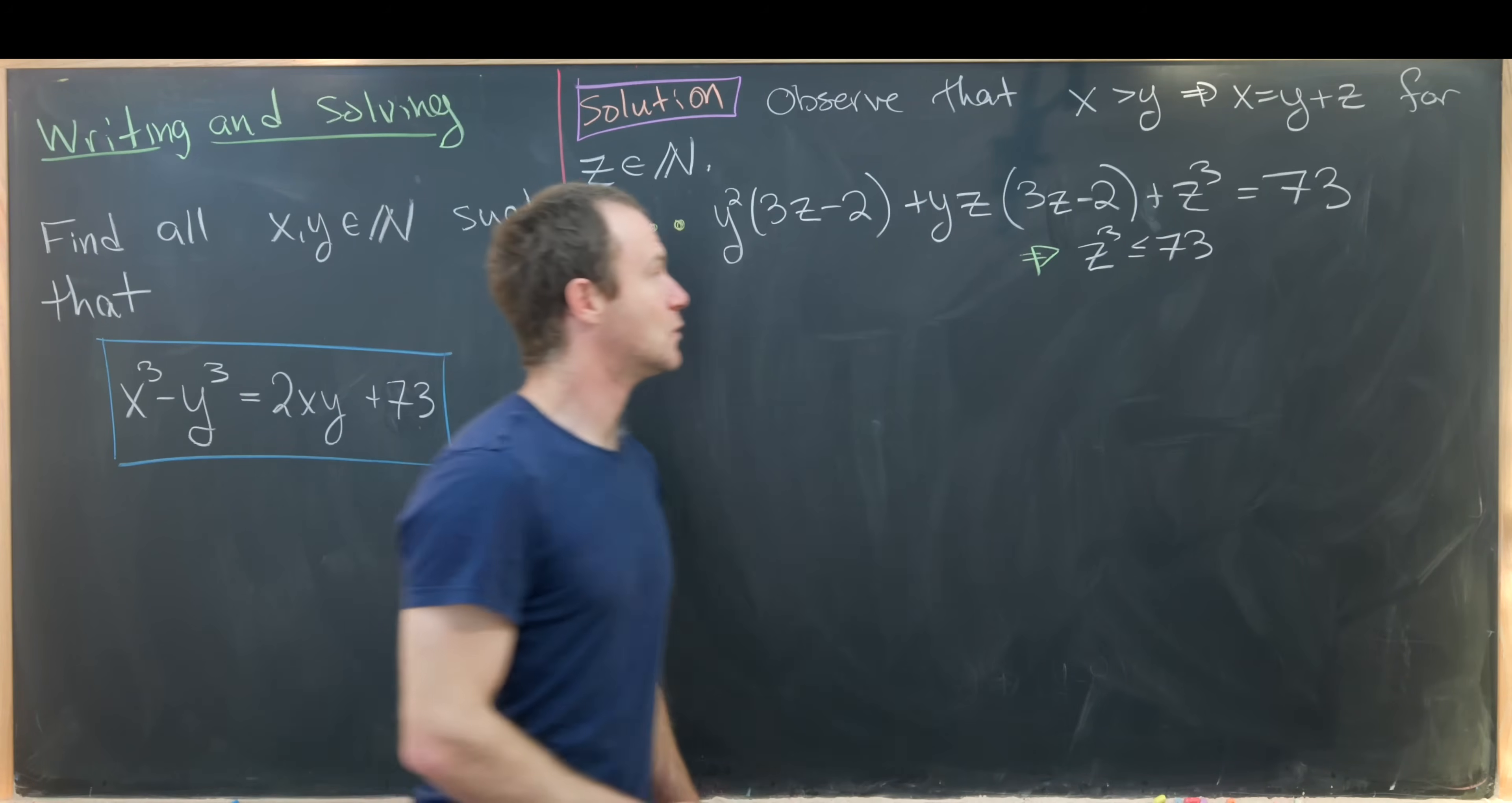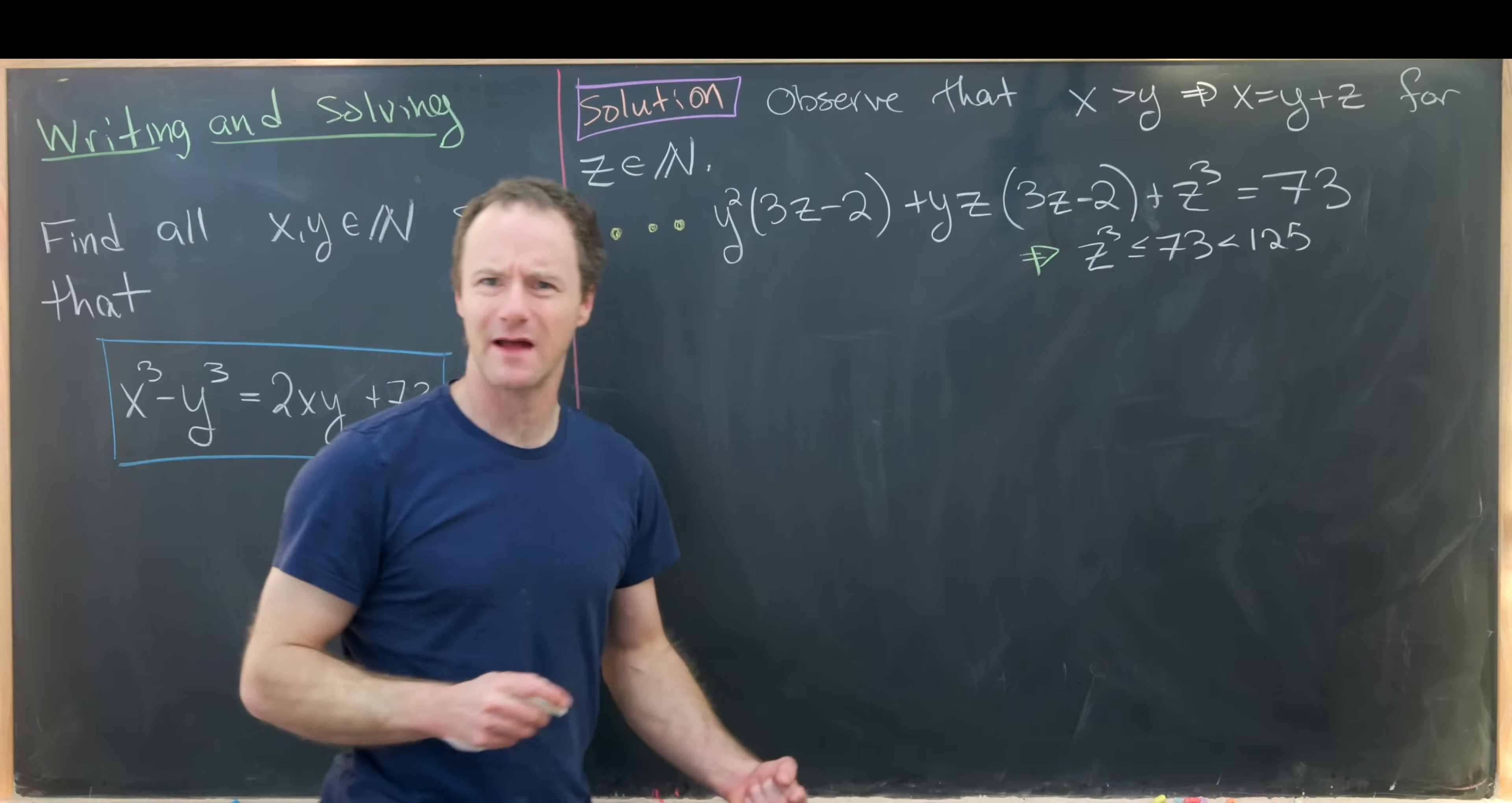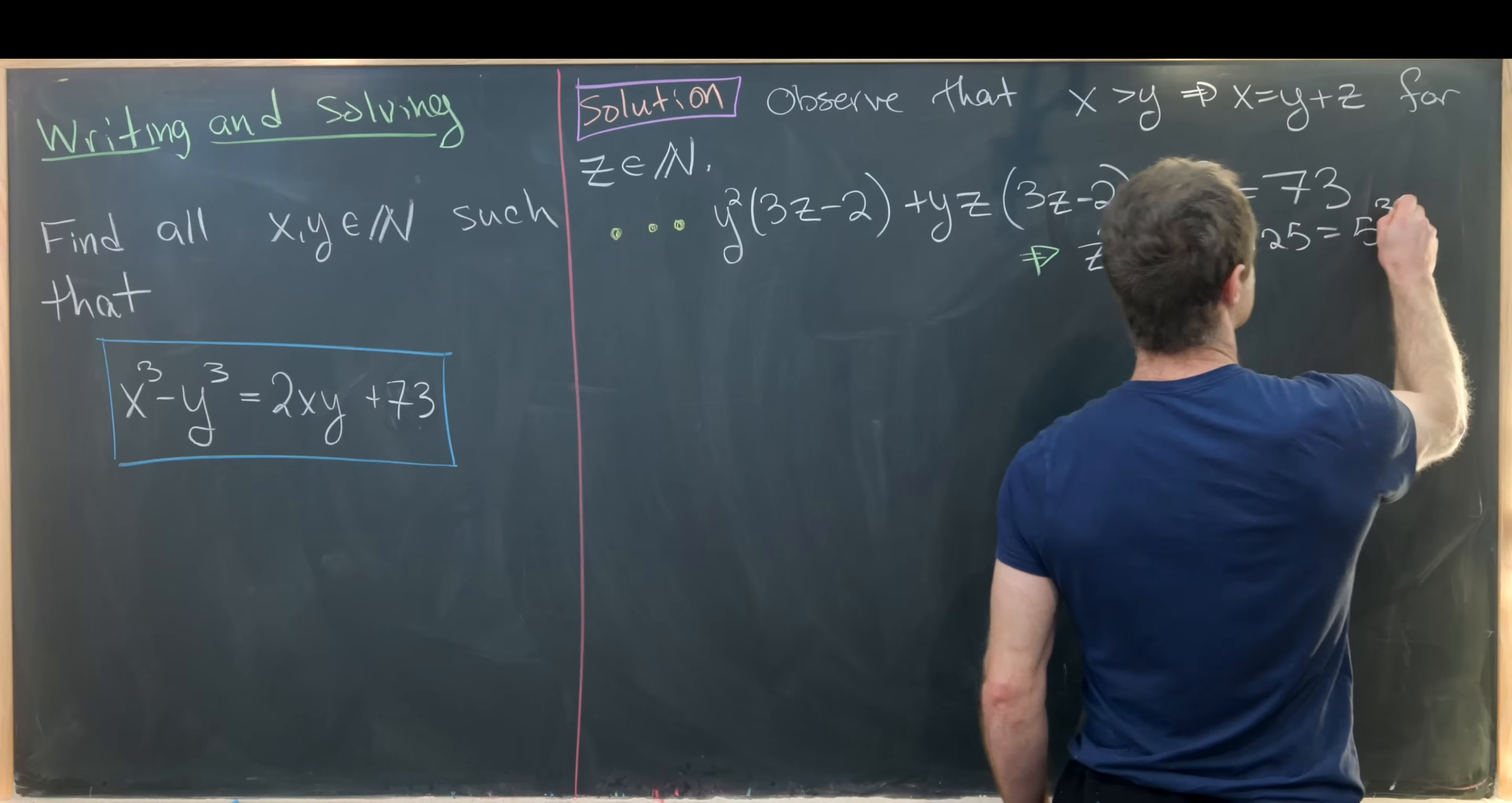And so let's notice that from this equation we see that z³ is less than or equal to 73, which is in turn strictly less than 125.